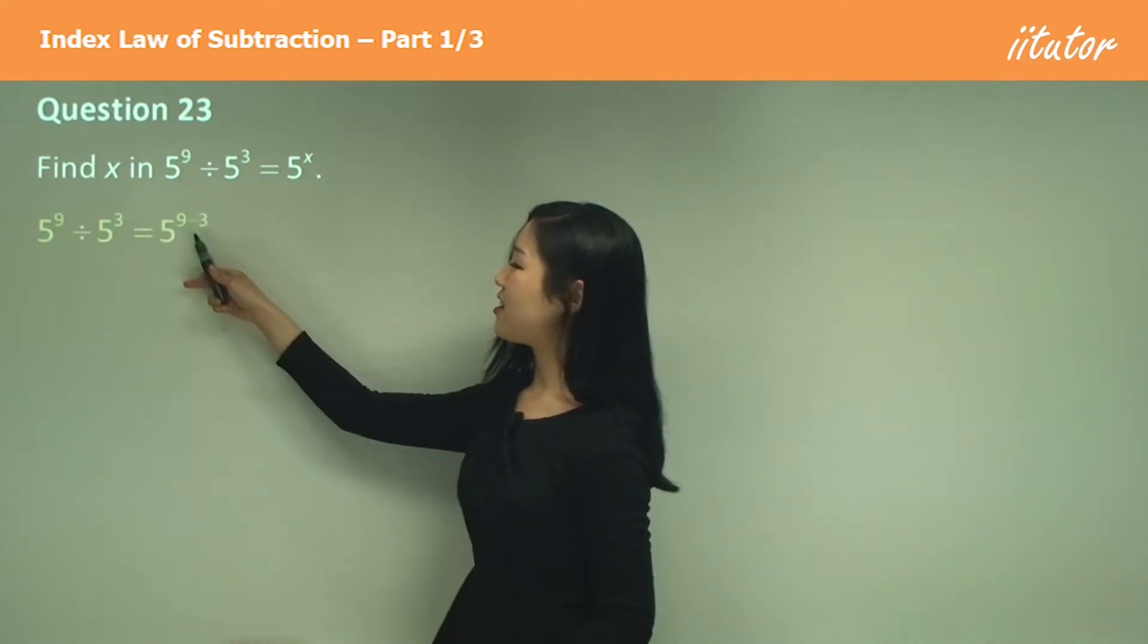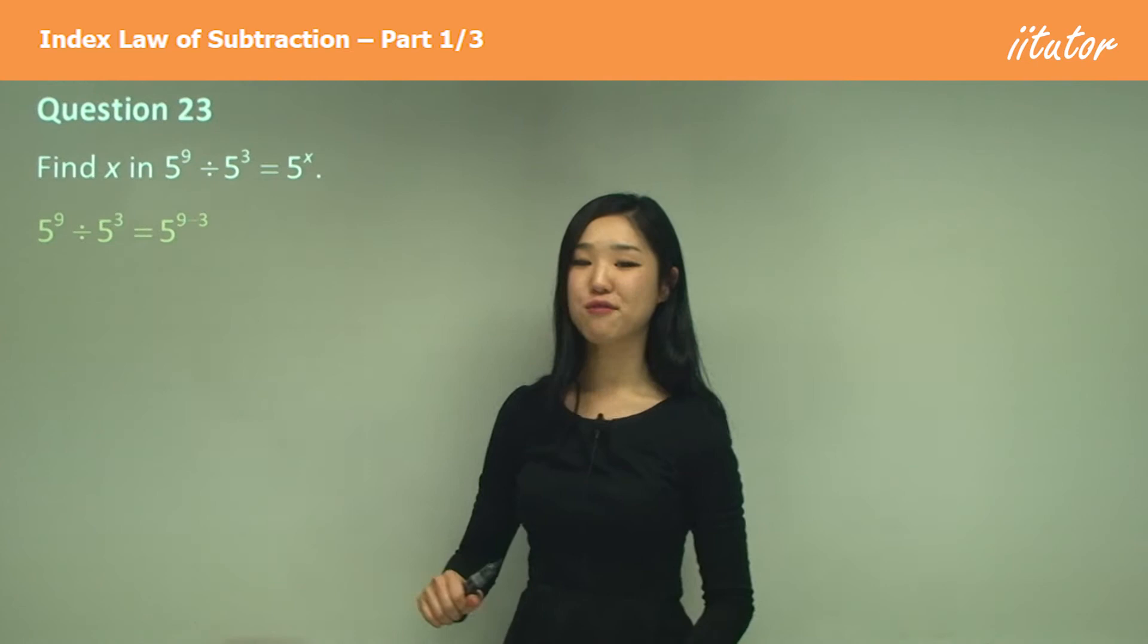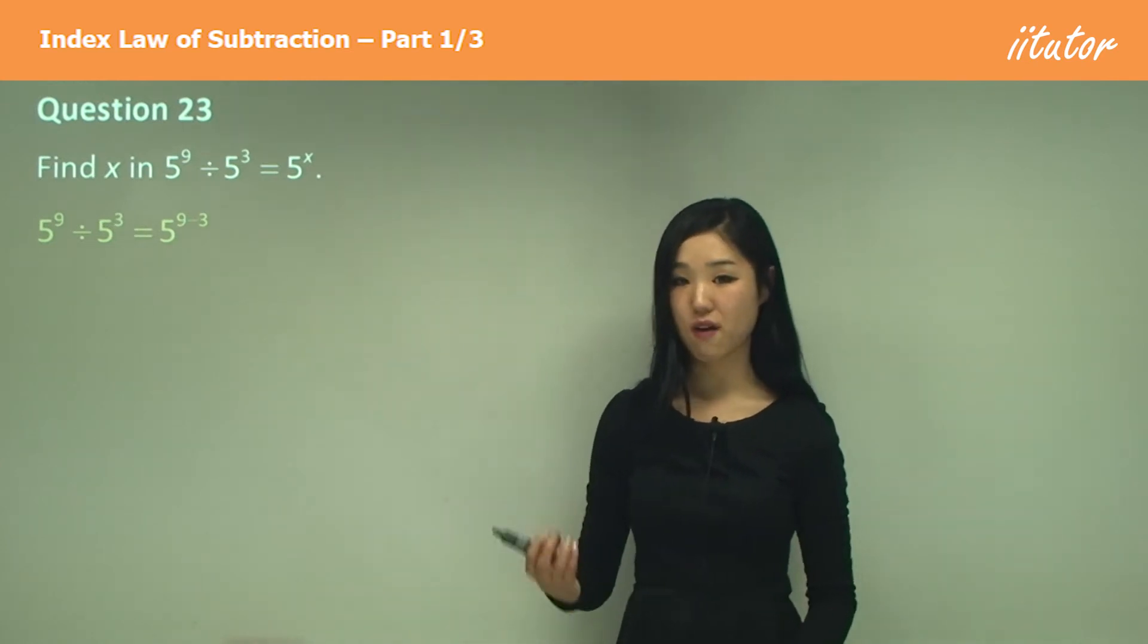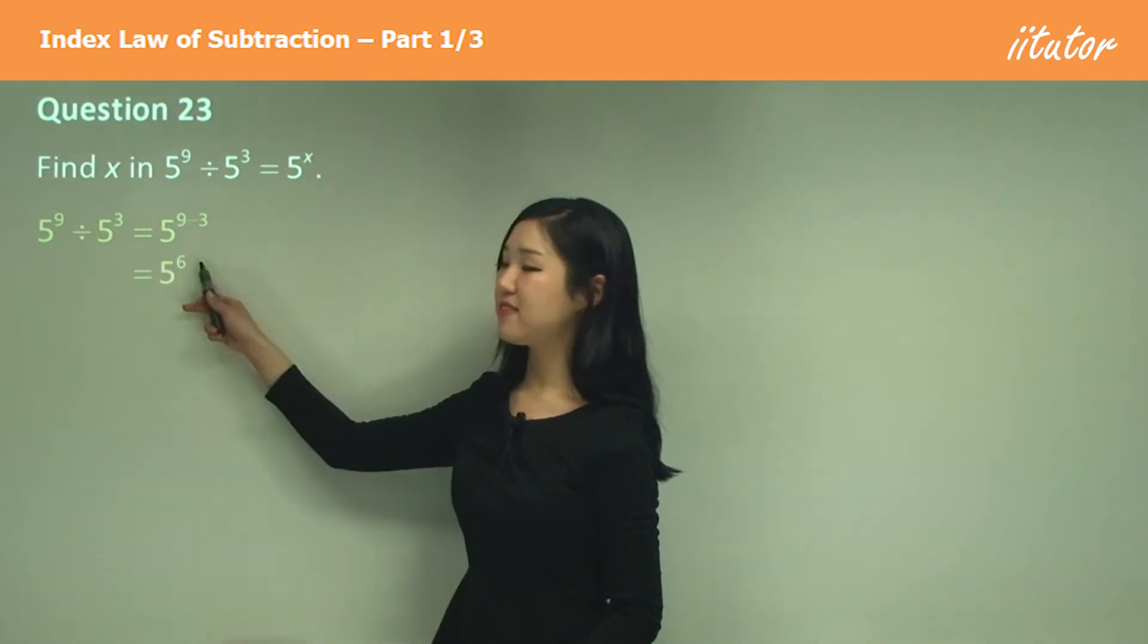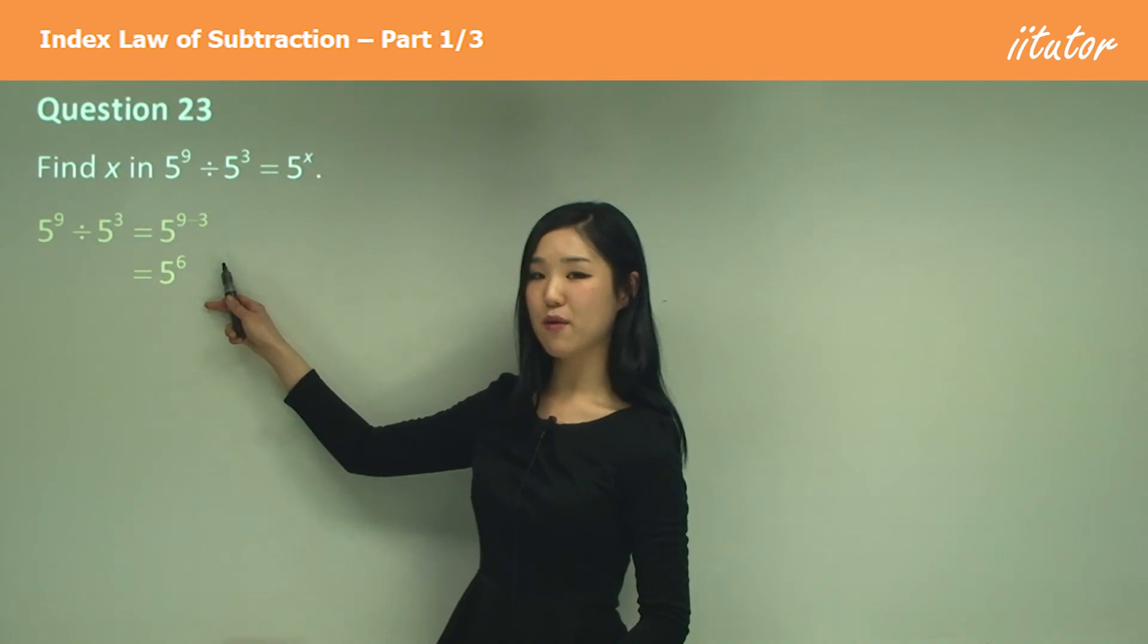Subtract. I'll go 9 minus 3 on the power of 5. Make sure you keep the base as 5. And 9 minus 3 is 6, so we have 5 to the power of 6. That's how we simplify it.